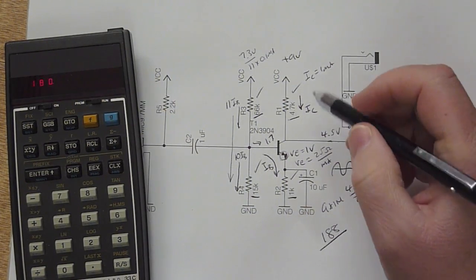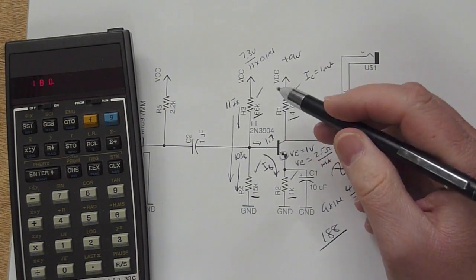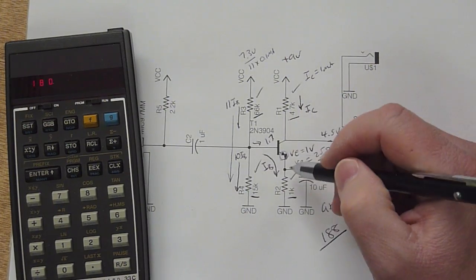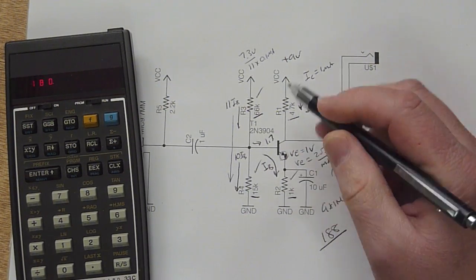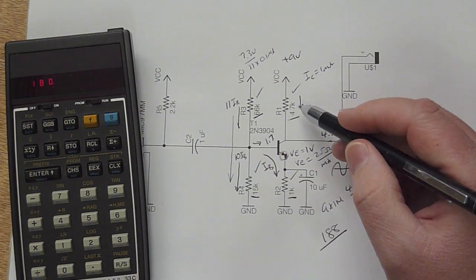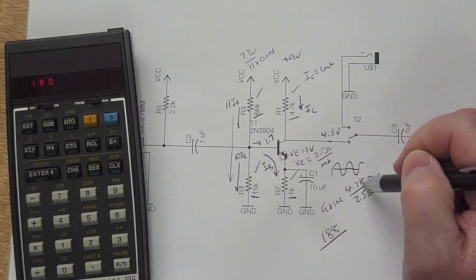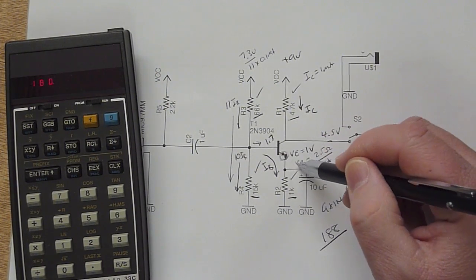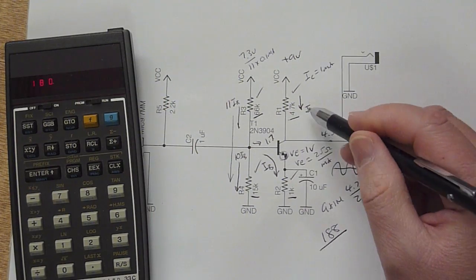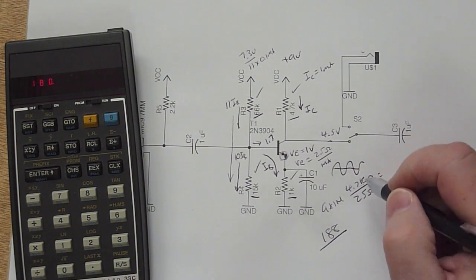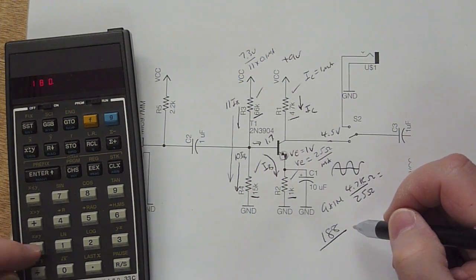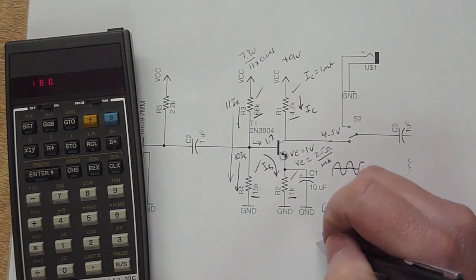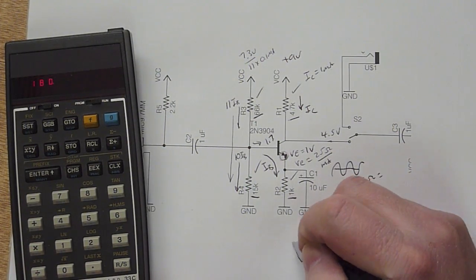So we were looking at the gain of the circuit for an AC signal. So when the frequency is high enough that essentially this resistor is completely bypassed, our gain is going to be 4,700 ohms divided by the emitter resistance, the intrinsic resistance, which is about 25 ohms for our 1 milliamp collector current. So 4,700 divided by 25 turns out to be 188. So that's our gain, 188.